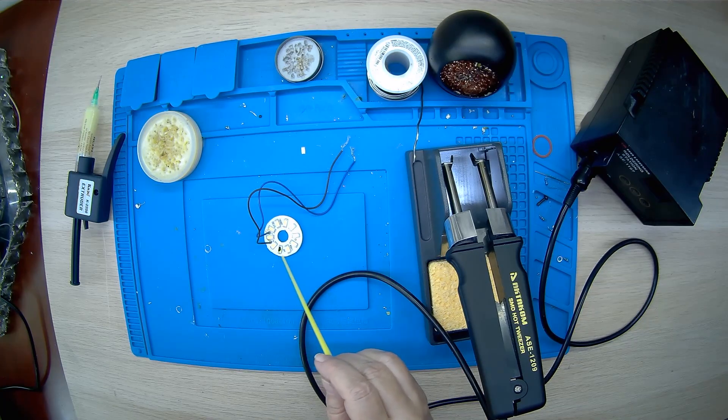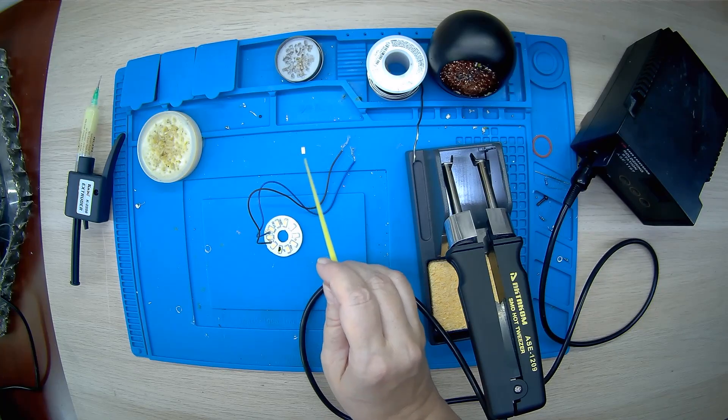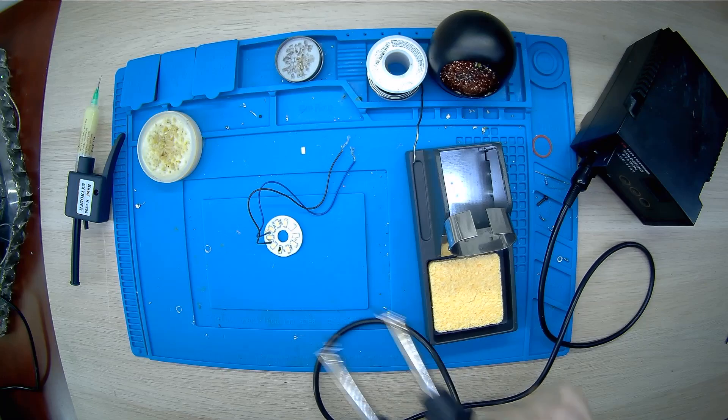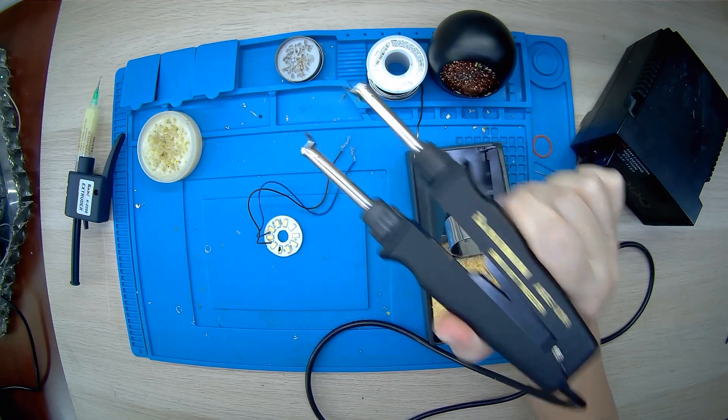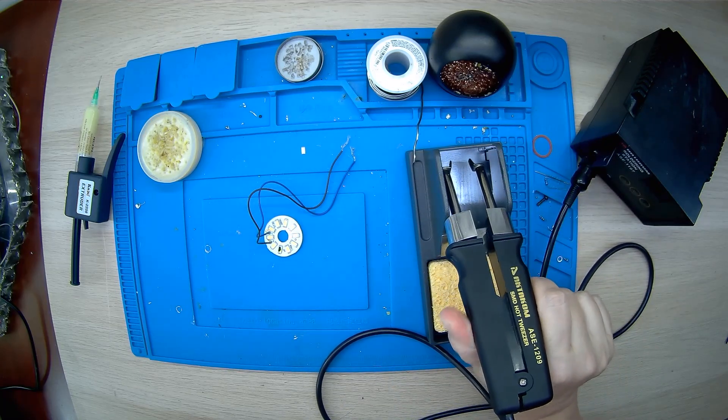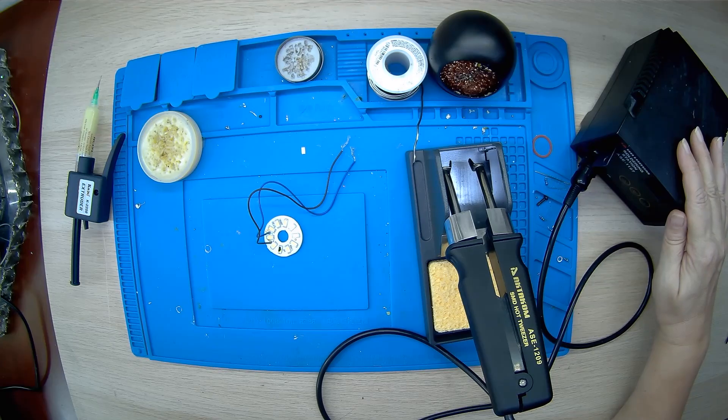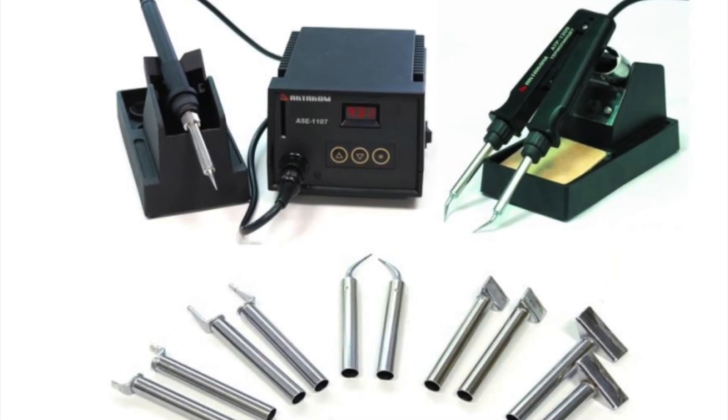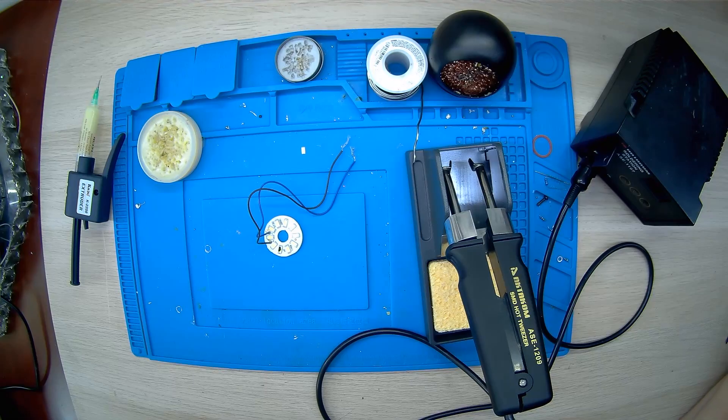To fix this, let's replace the broken LED in the LED ring. For this, we use ASC1209 soldering tweezers together with digital soldering station ASC1107. In the previous video, we showed how to do it. The link is in the top corner and in the description under the video.